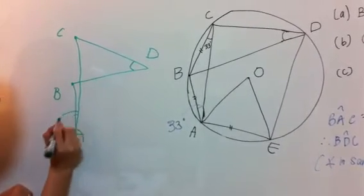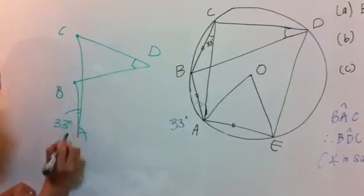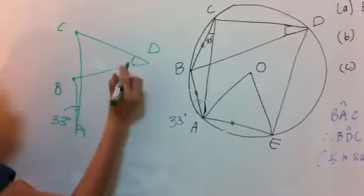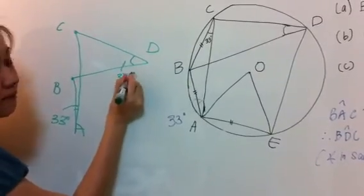So, this is, we know, 33 degrees. Therefore, if BAC is 33 degrees, BDC is also 33 degrees. Okay?